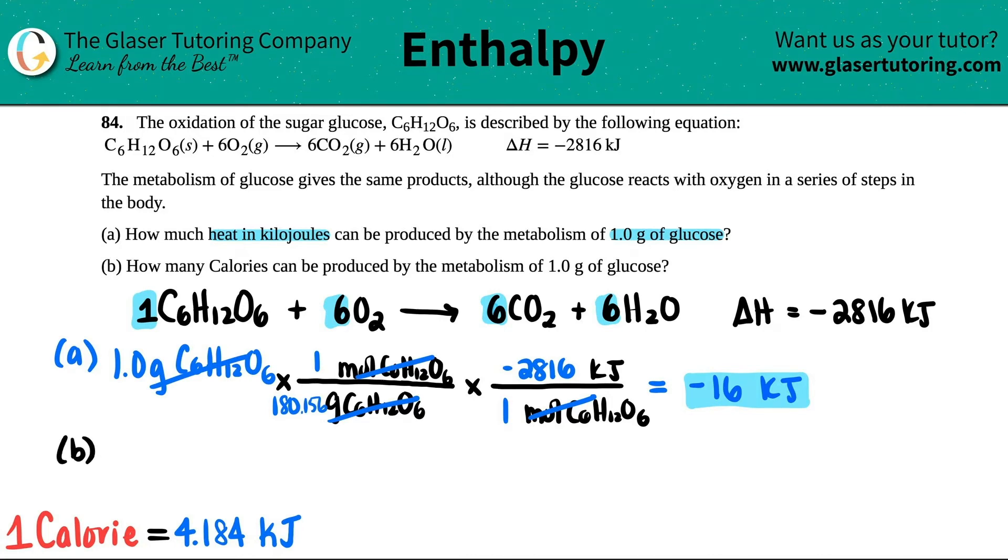Now, let's go to B. And actually, B I could put over here. So now it says, how many calories can be produced by the metabolism of 1 gram of glucose?